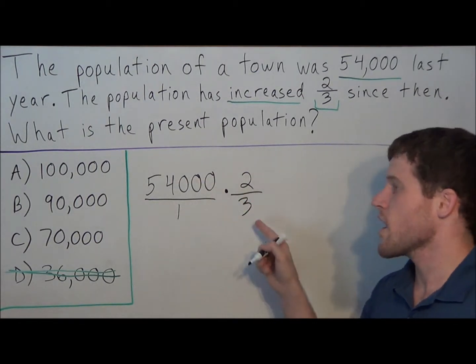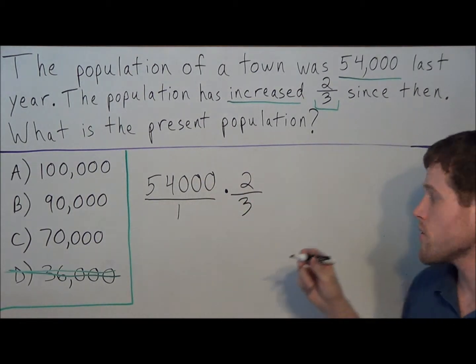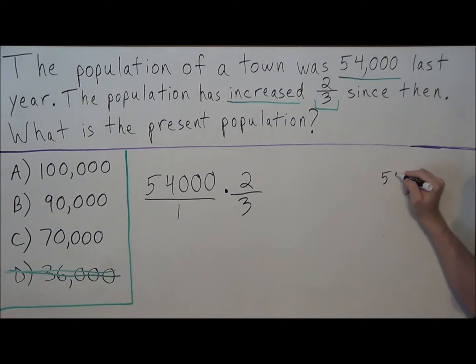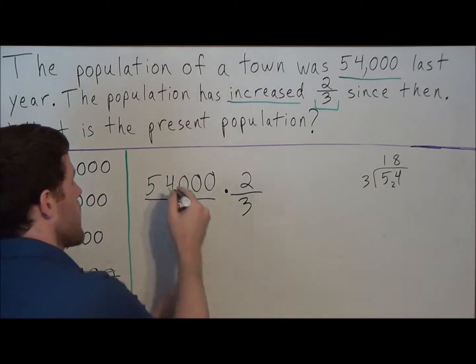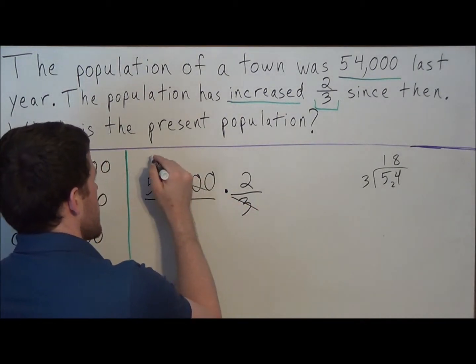And what we mean by this, 54,000 divided by 3, we could simplify that first. And if we think about it, 54 divided by 3, 3 goes into 5 once, with the remainder of 2, 3 goes into 24 eighteen times. So that tells us that 54,000 divided by 3 is 18,000.